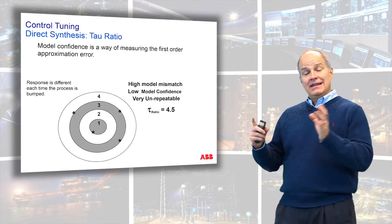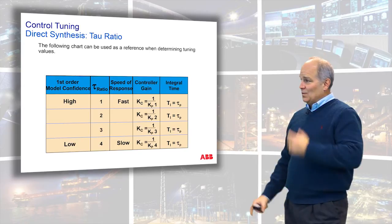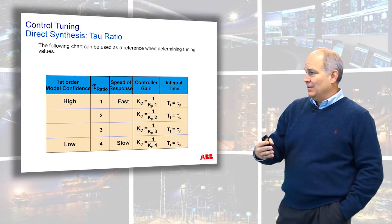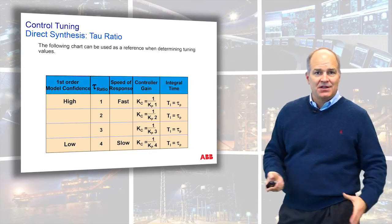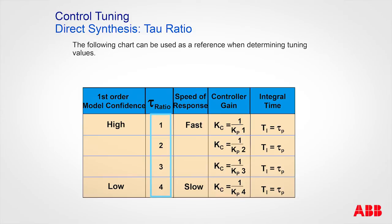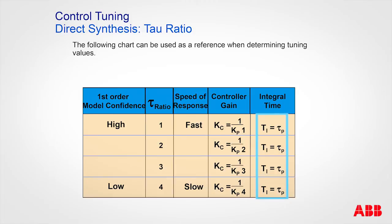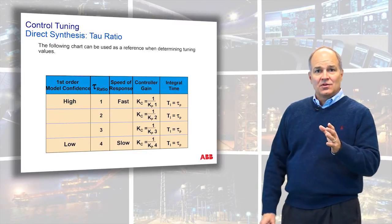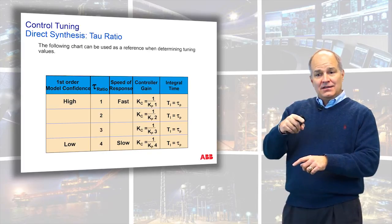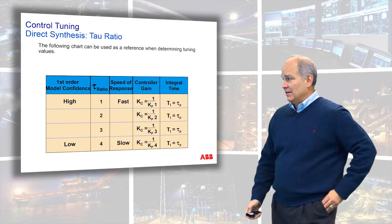Bigger targets mean slightly slower response, but more stability. I typically make a chart with a few tau ratios. In my head, a tau ratio of 1 is fast relative to the process dynamics, and a tau ratio of 4 is slow. If you're using a standard PID algorithm, the integral time TI equals the time constant — make sure units match. The control gain is inversely related to the process gain, and the tau ratio changes the speed. Keep scaling in mind — check how your manufacturer normalizes gain.